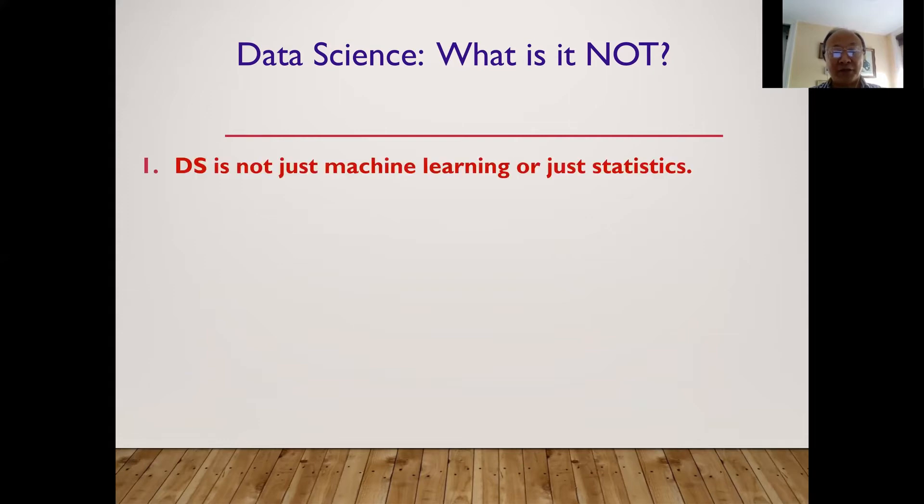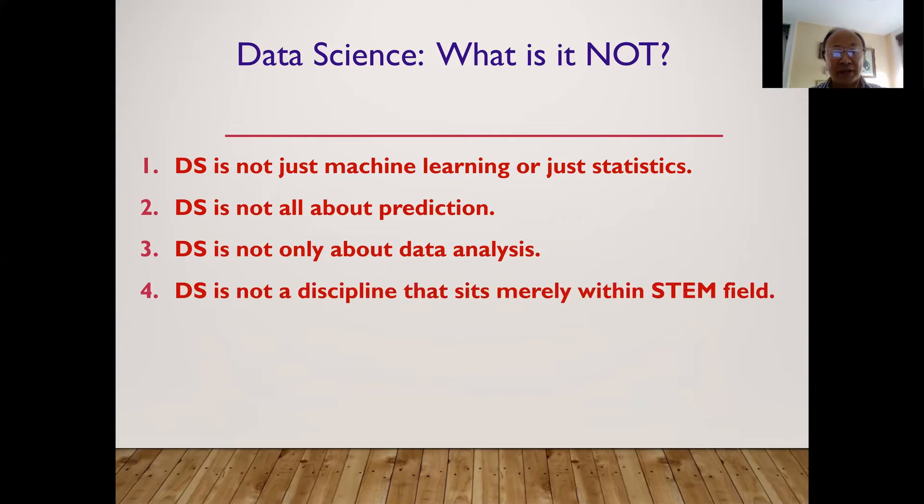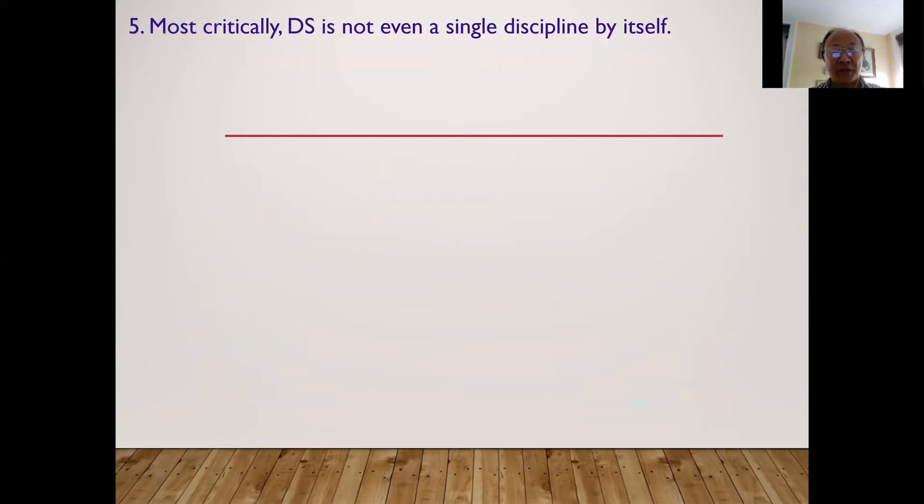And I guess many of you would agree with me, data science is not just machine learning or just statistics. Data science is not all about prediction. Data science is not only about data analysis. Data science is not a discipline that sits merely within the STEM field. But my punchline is really data science is not even a discipline by itself. And this is important to recognize, because without recognizing that I know that there are universities who have tried to squeeze everything into a department of data science.